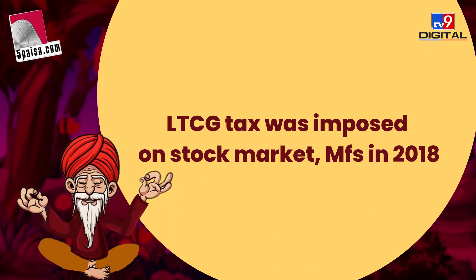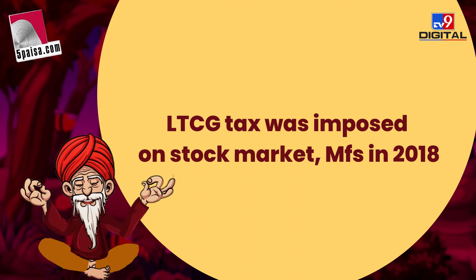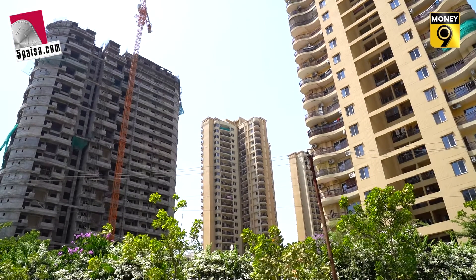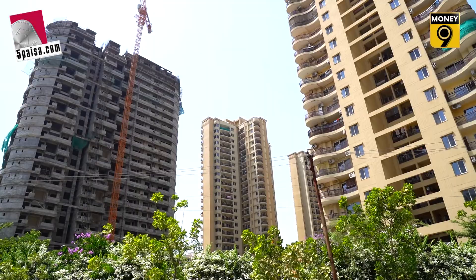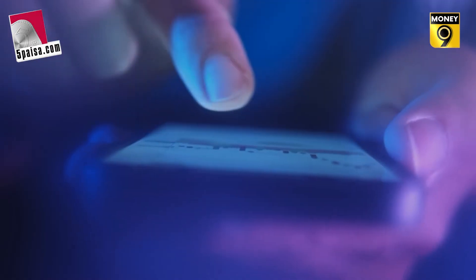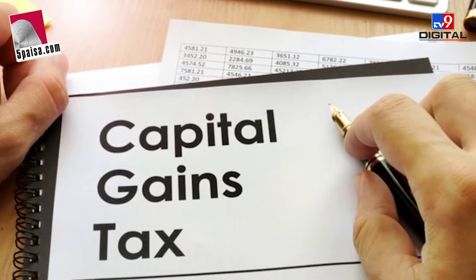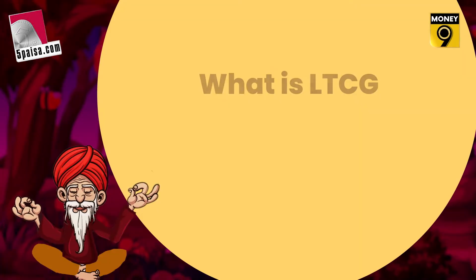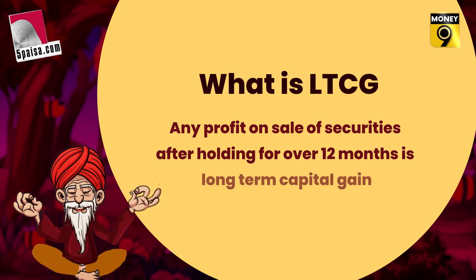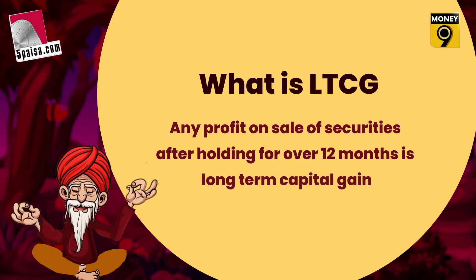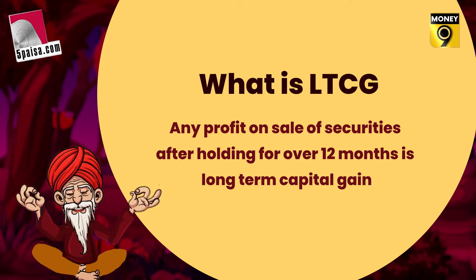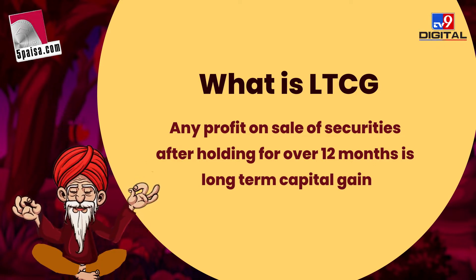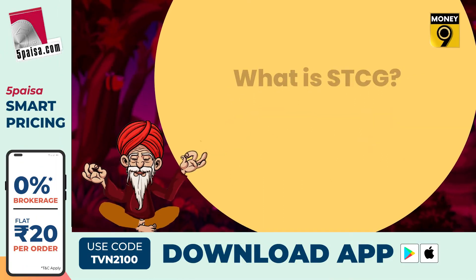When do we get LTCG and STCG? When you sell a property like land, house, or shares, the profit on them is known as capital gains. If you sell an equity share or equity mutual fund after holding for 12 months, the tax on selling them is known as long-term capital gains tax, or LTCG.